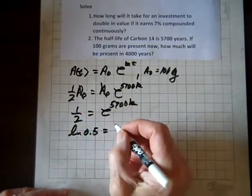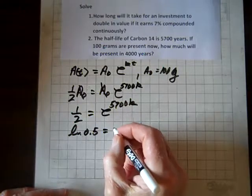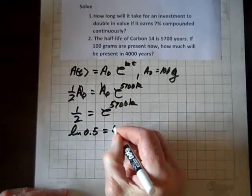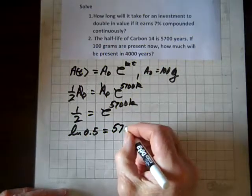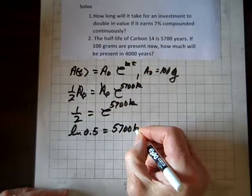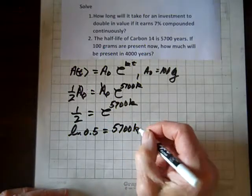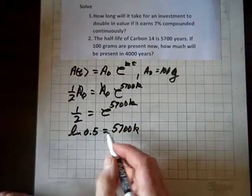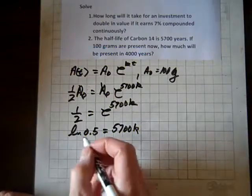One half can be written in decimal form as 0.5. And by the law of logs, we can bring this, the exponent down as the coefficient on ln of e. But ln of e is 1, and 1 times 5,700 k is 5,700 k.